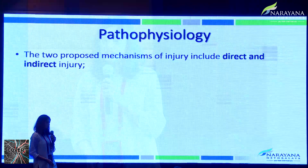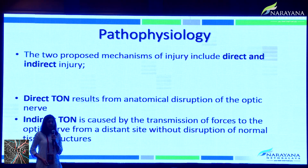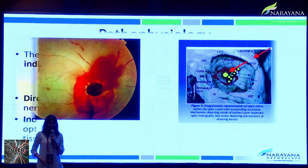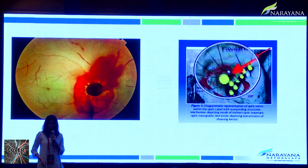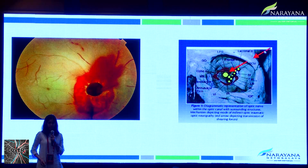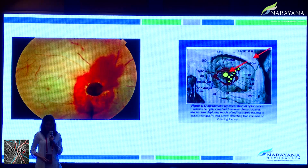Depending upon the mode of injury, Traumatic Optic Neuropathy can be classified as direct and indirect. Direct traumatic optic neuropathy results from anatomical disruption of the optic nerve, whereas indirect traumatic optic neuropathy — which is most common — is caused by transmission of forces to the optic nerve from a distant site. Direct injury can cause optic nerve avulsion or optic nerve transection.